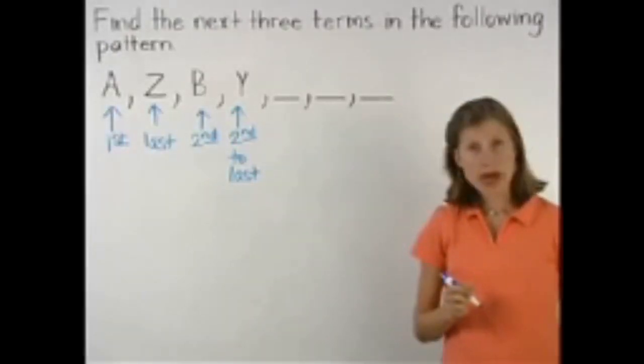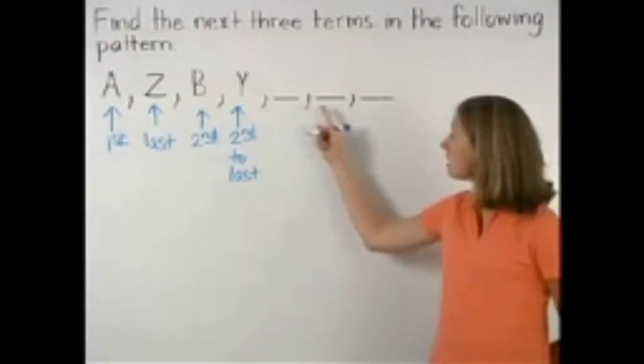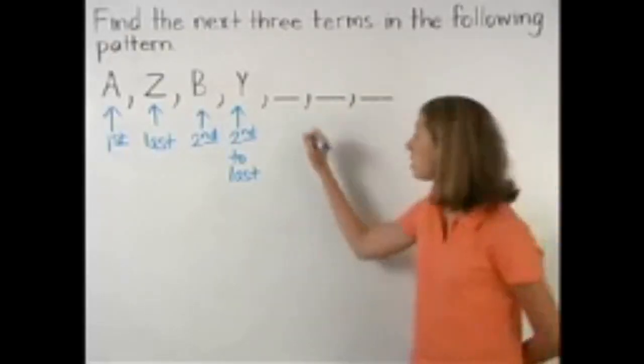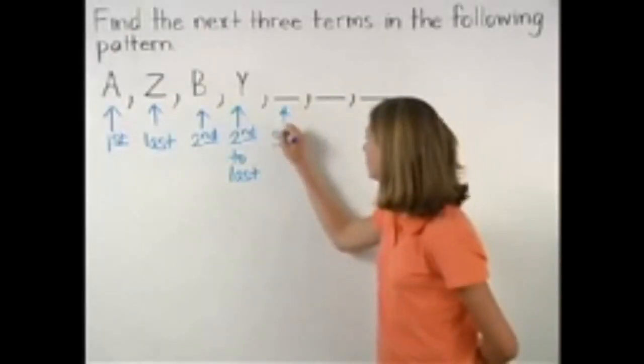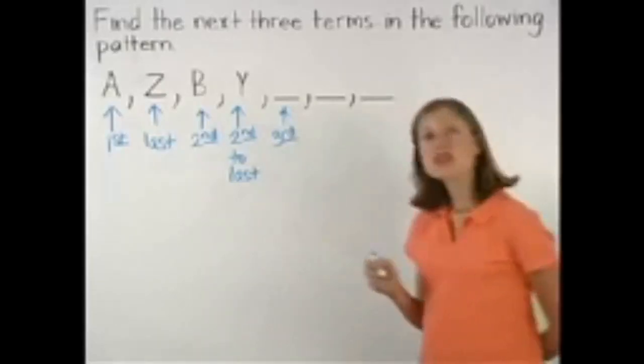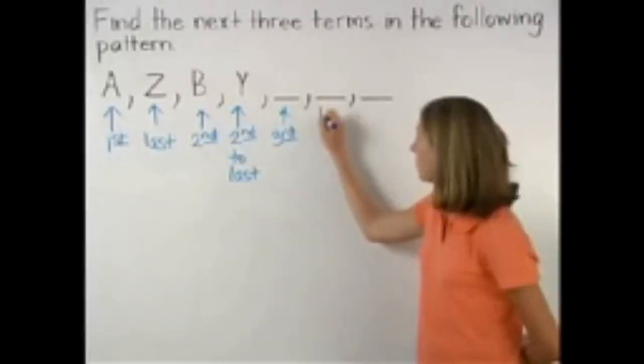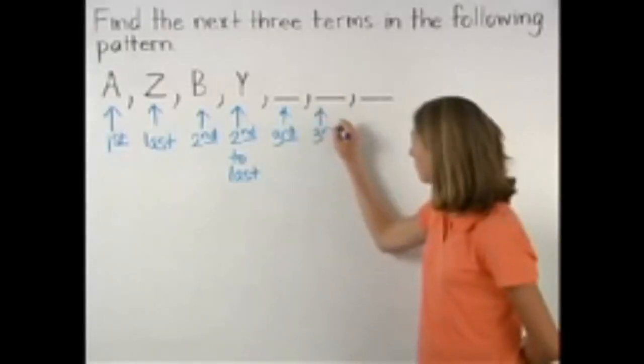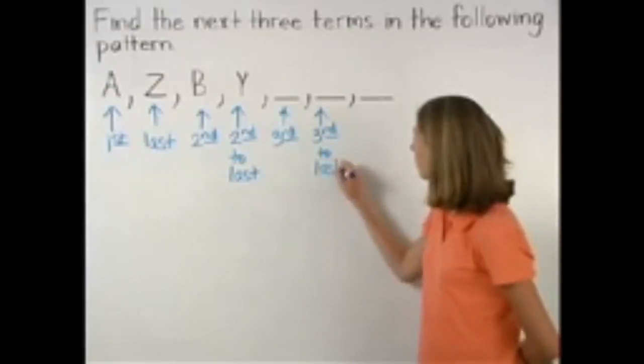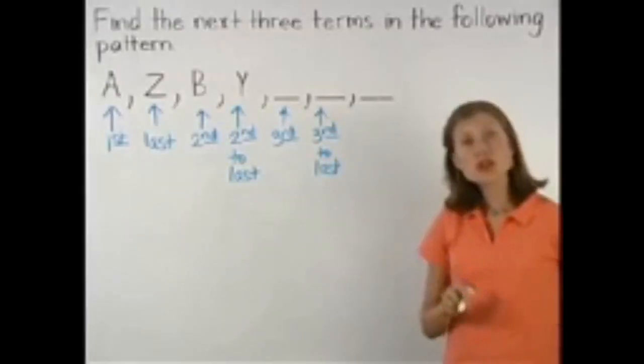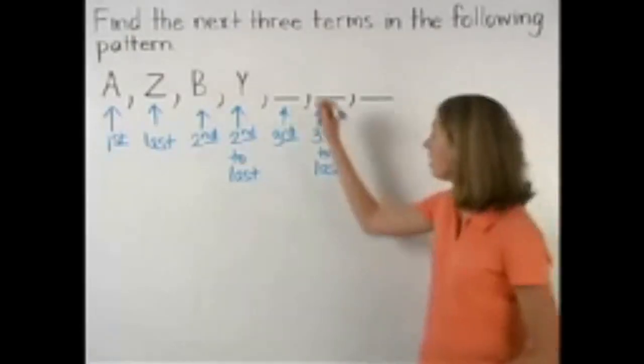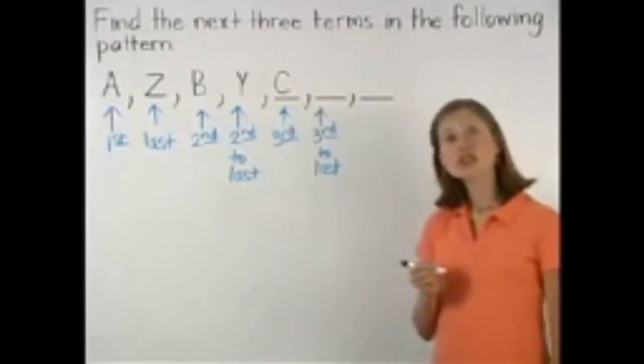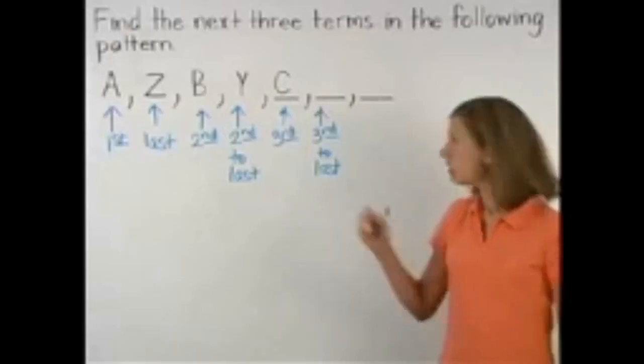Continuing with the same pattern, notice that the next two terms should be the third letter of the alphabet and the third to last letter of the alphabet. The third letter of the alphabet is C and the third to last letter of the alphabet is X.